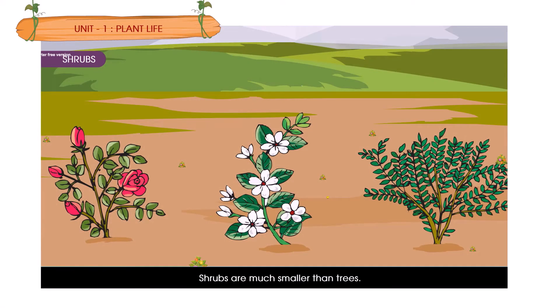Shrubs. Shrubs are much smaller than trees. Shrubs have thin, brown and woody stems. They have many branches. The branches grow close to the ground. Most shrubs live for a few years.